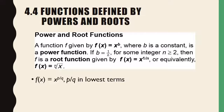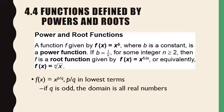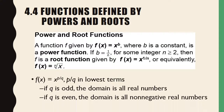f of x equals x to the p over q, where p over q is in lowest terms — in other words, x to a fractional power reduced to lowest terms. A couple of facts: if the denominator is odd, the domain is all real numbers. However, if the denominator is even, the domain is all non-negative real numbers.